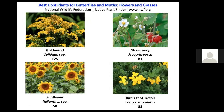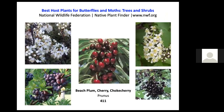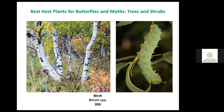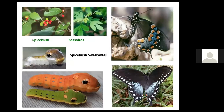Looking at trees and shrubs, the numbers are much more impressive. Oak leaves host 473 different species. Members of the genus Prunus — such as beach plum, cherry, and choke cherry — host plants for 411 butterflies and moths. Willows host 399, and birch trees 393 different species. If you're a female spicebush swallowtail, you'll lay your eggs only on spicebush or sassafras, as no other leaf is edible to these larvae — caterpillars of the spicebush swallowtail have fake eyes on the sides of their head that serve to startle would-be predators.